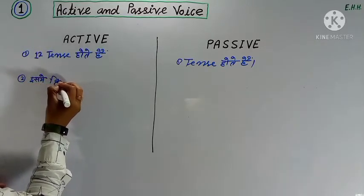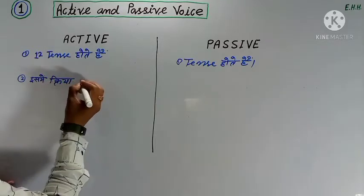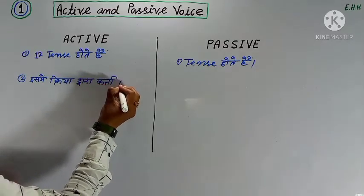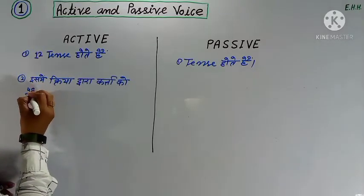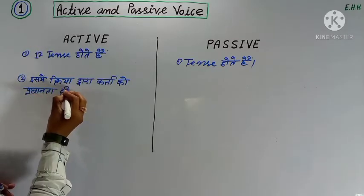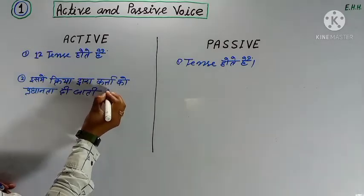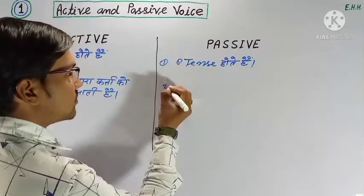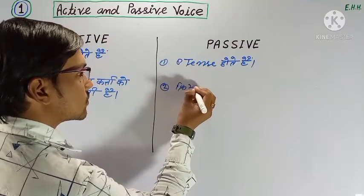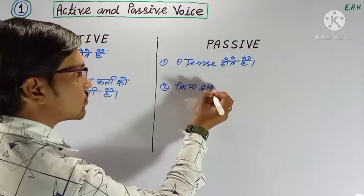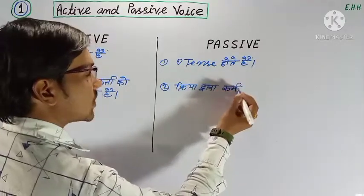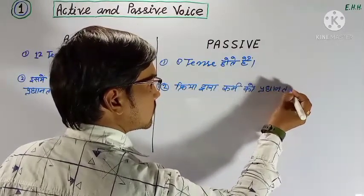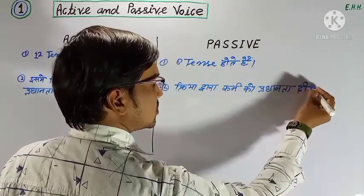The rules of passive voice are: First, in active voice, the verb gives prominence to the subject. Second, in passive voice, the verb gives prominence to the object.